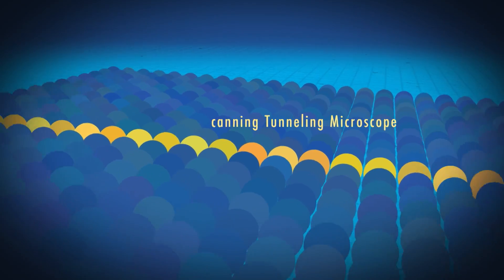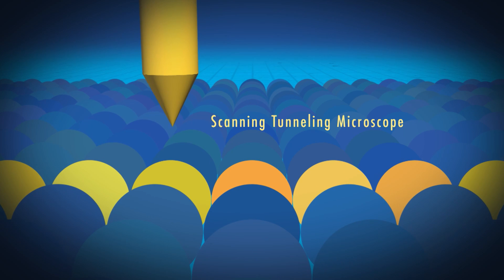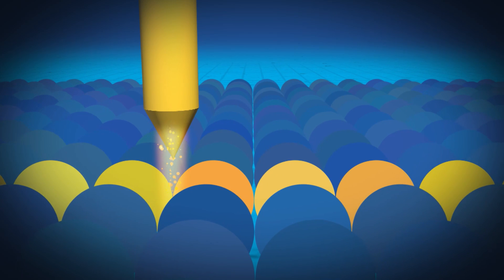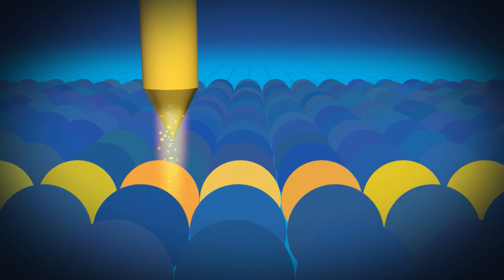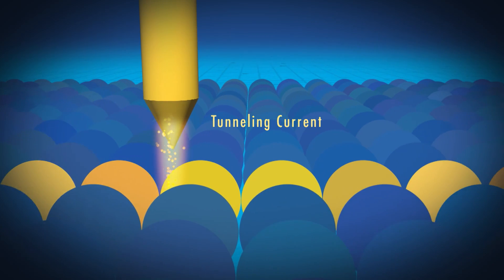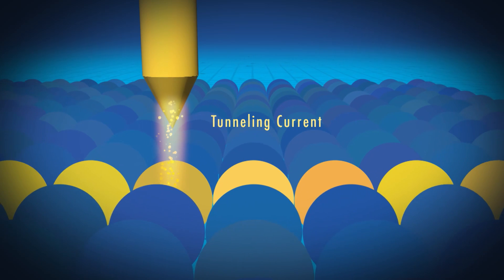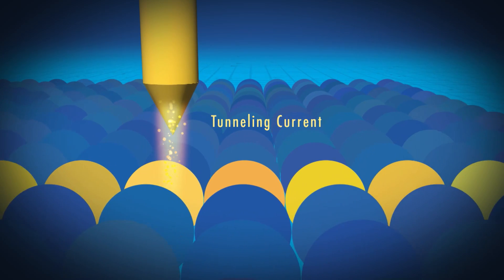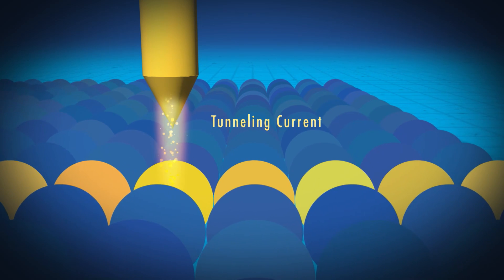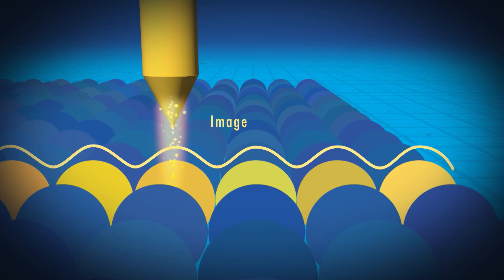The scanning tunneling microscope works by placing a probe tip just above the sample. From the closest atom on the probe tip to the closest atom on the sample, the electrons flow. This flow of electrons is called a tunneling current because the electrons tunnel through the vacuum between the tip and the sample. As the microscope is scanning, the tunneling electrical current is kept constant by adjusting the height of the probe tip above the surface. This motion creates an image.